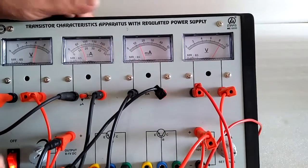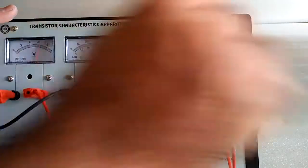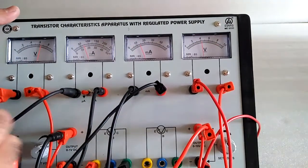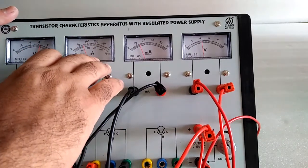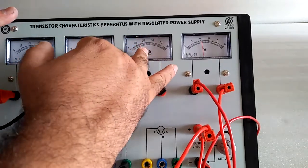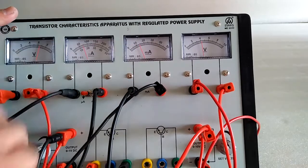And for transfer characteristics, we have to set at, suppose, 4 volts. Now IC and IB - this is current IB and IC. We have made the graph between them.